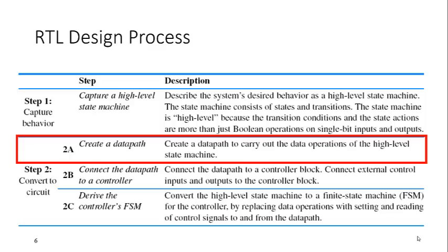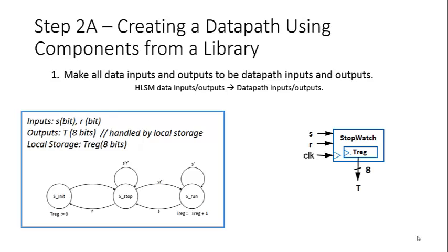Step 2A is to create a datapath. We want to take that HLSM and create a datapath to carry out the data operations. We have a general model on the right. We see that our stopwatch is going to have a registered output, and it has two inputs, S and R.